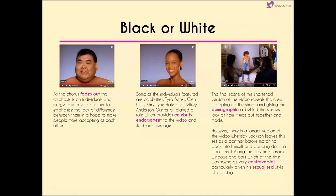The final scene reveals the crew wrapping up the shoot, giving the demographic a behind-the-scenes look. This is the end of the short version of the video — a longer version was released and is not necessary for the exam to know in detail, but it's worth knowing it existed. Controversy surrounded the longer version even at the time: Jackson morphs into a panther, then back into himself, and starts dancing down a dark street smashing windows and cars — considered controversial both for potentially inciting vandalism and for the overly sexualized dancing in that scene.